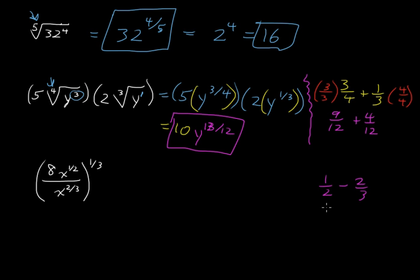So that's a negative 1 sixth. Negative 1 sixth. And we'll see what happens there in just a little bit. So that is 8 times x to the negative 1 sixth.